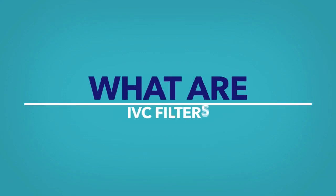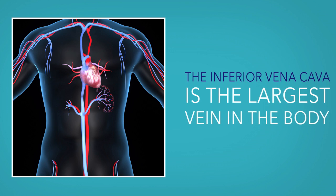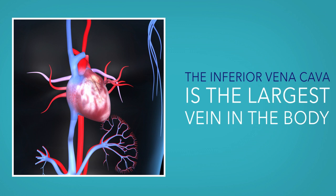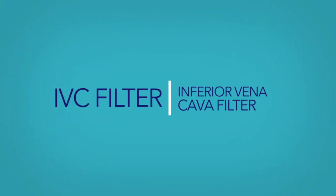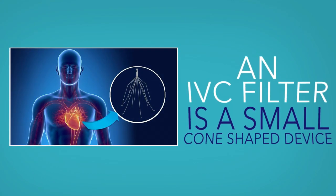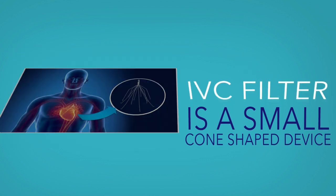What are IVC filters? The inferior vena cava is the largest vein in the body. It carries deoxygenated blood from the lower extremities to the right atrium of the heart and then to the lungs. An inferior vena cava filter, or IVC filter, is a small cone-shaped device that is implanted into the inferior vena cava just below the kidneys.